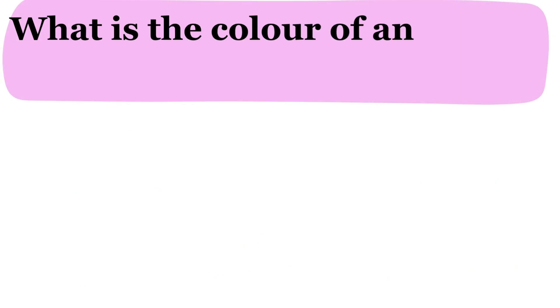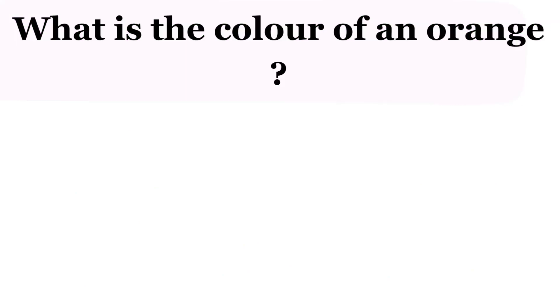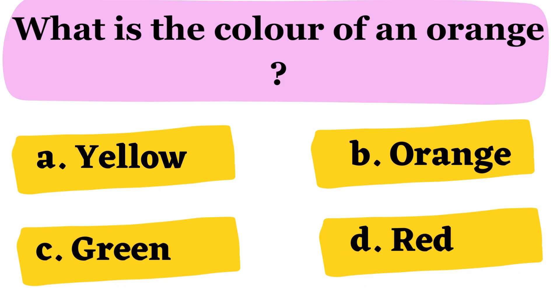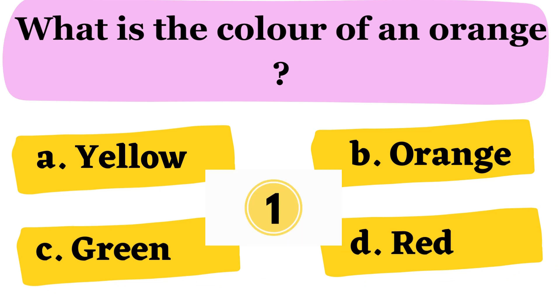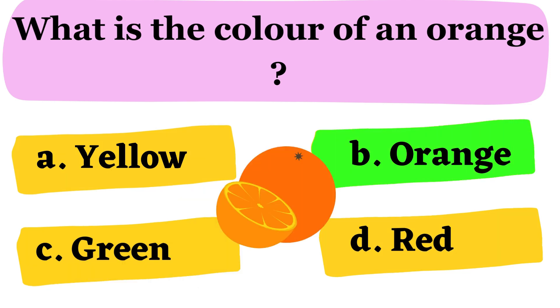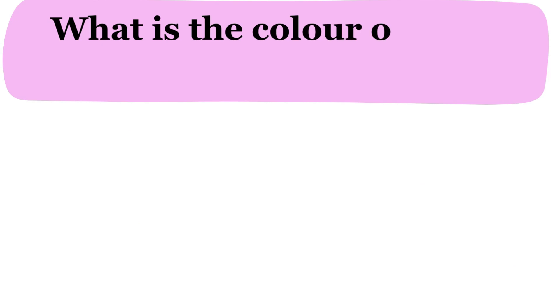What is the color of an orange? A. Yellow B. Orange C. Green D. Red. The correct answer is option B. Orange.